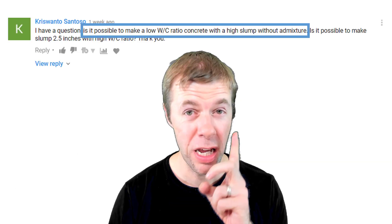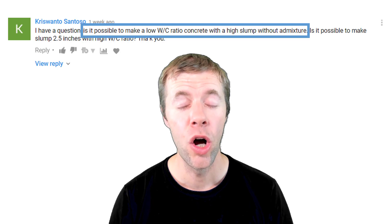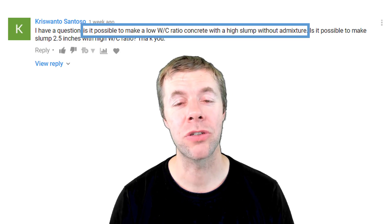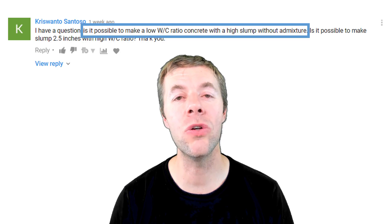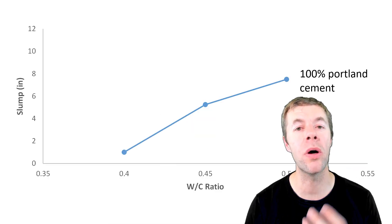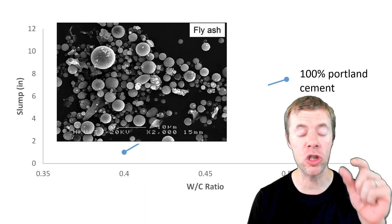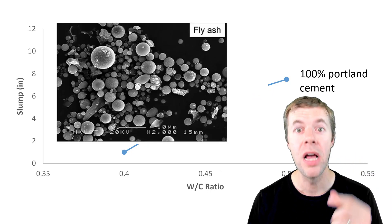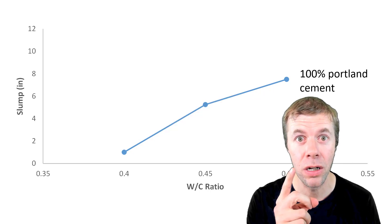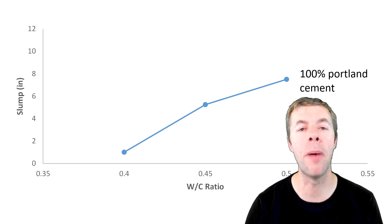The other question: is it possible to make a low water to cement ratio concrete with a high slump without admixtures? We're going to look at using fly ash. We're going to take this same mixture and mix it with fly ash. Fly ash are small spherical particles that can make your concrete more workable — and the answer is sometimes it does, but not all the time.